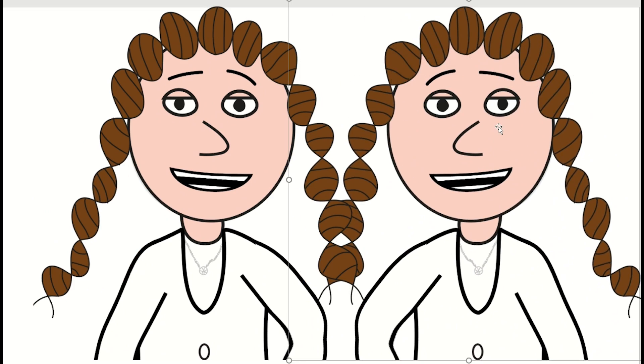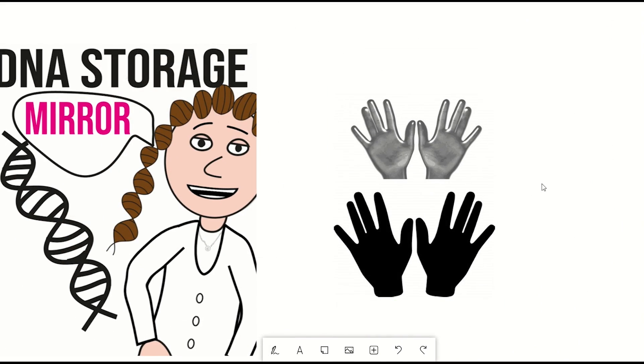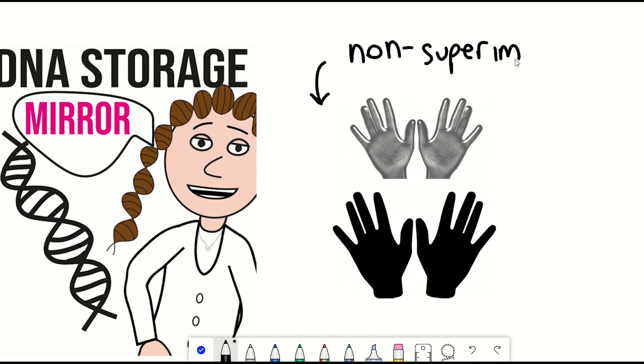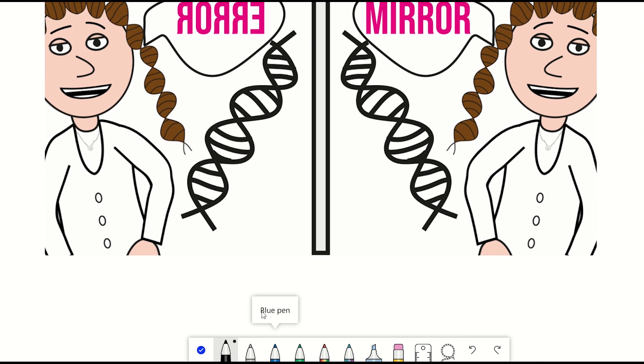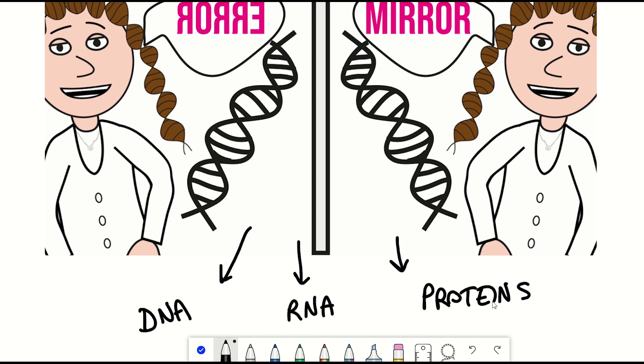The same can be said about your left and right hand - they're non-superimposable. Now the interesting thing is that these concepts also apply to chemical compounds, and this includes DNA, RNA and proteins, the building blocks of life.